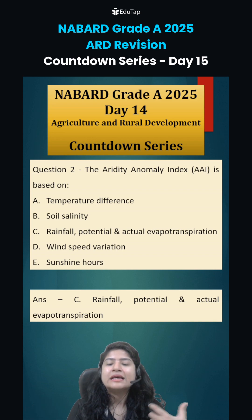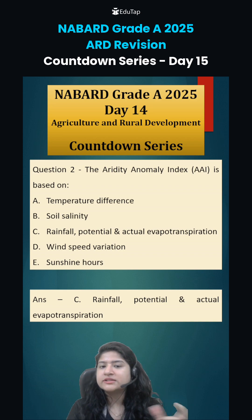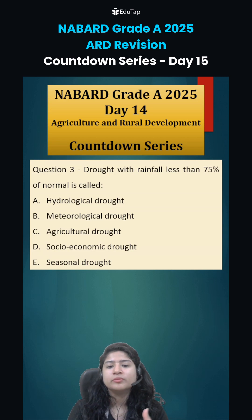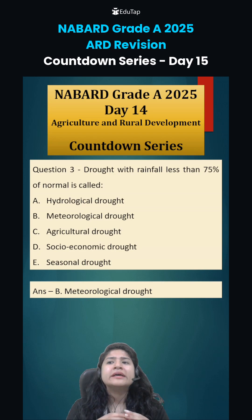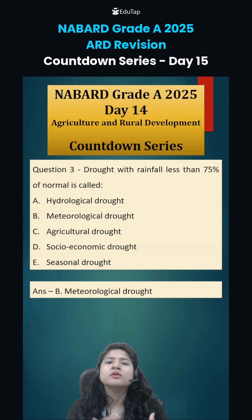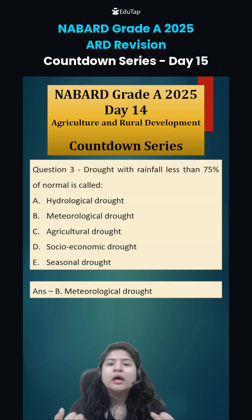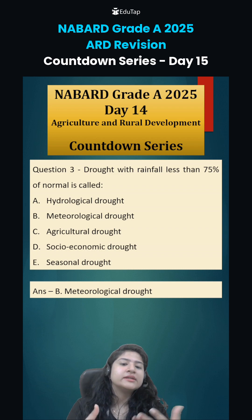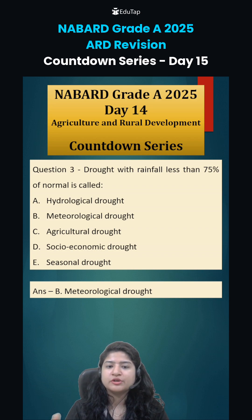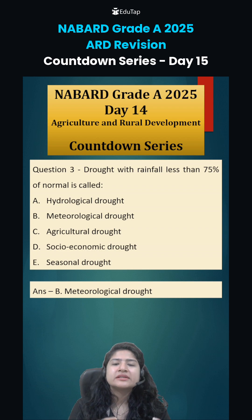This index assesses drought situations. Meteorological drought is when rainfall is less than 75% of normal. Immediate effects are not observed on crops or water bodies, but there is a measurable decrease in normal rainfall. That is known as meteorological drought.